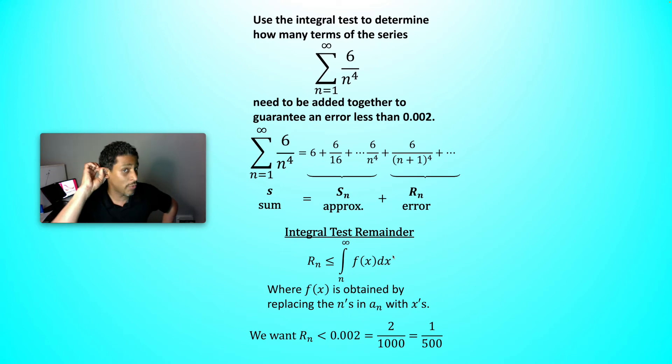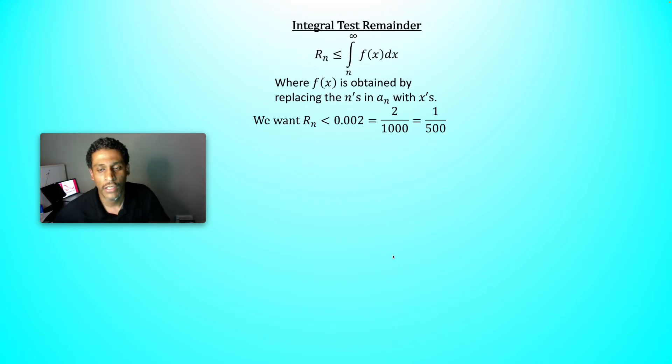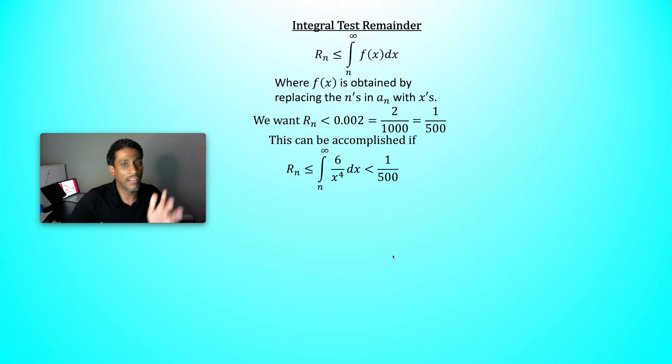Now what is actually 2 over a thousand? We can reduce that. That's 1 over 500. Because we don't have a calculator, we're trying to have manageable fractions instead. We'd like for this to be less than 1 over 500. The way we're going to accomplish that, the integral test remainder says that our remainder is less than or equal to that integral. If we ensure that that integral is strictly less than 1 over 500, then yes, the remainder will be less than 1 over 500.